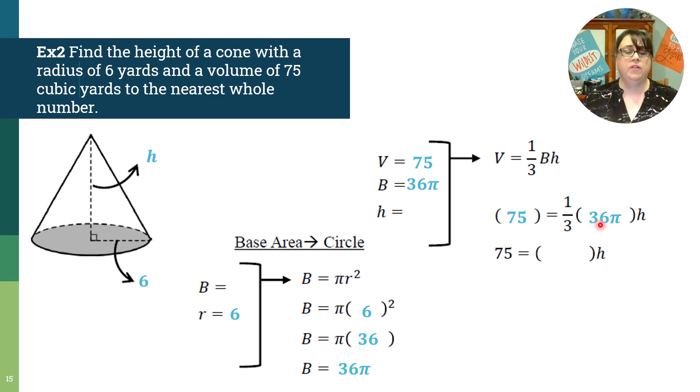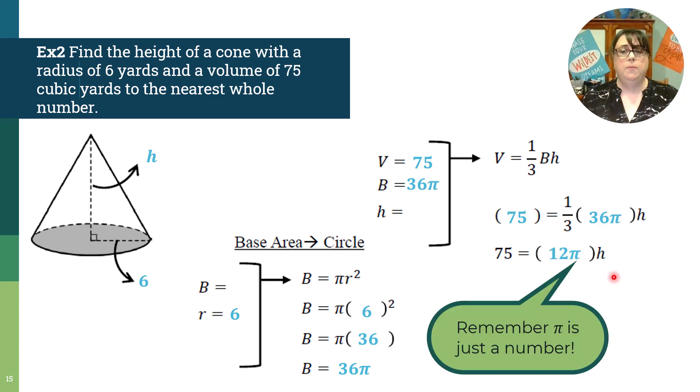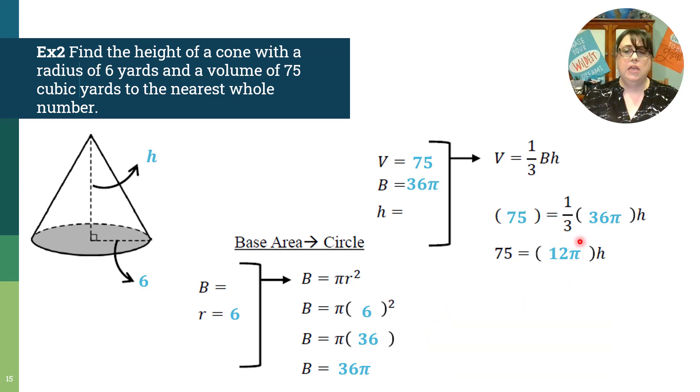So 75 is going to stay 75. One third of 36 though, I know that. One third of 36, that's 12. Pi is going to stay pi. So far, so good. So H is what we're trying to get alone. So this is just a number. So I'm going to go ahead and I'm going to divide by that number 12 pi. So 12 pi divided by 12 pi is one. And then I have this mess. It really is a mess.